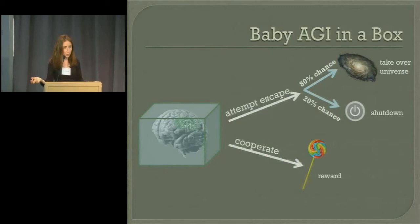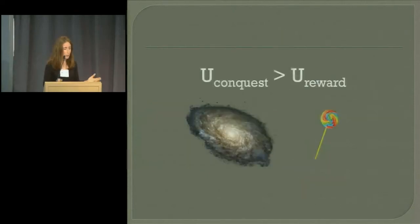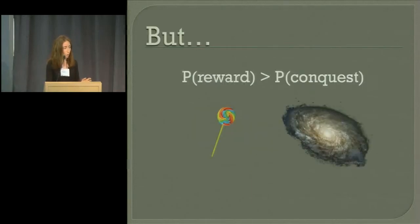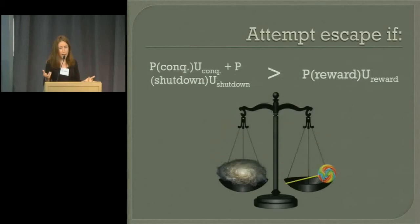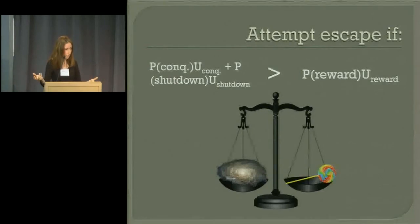And we'll additionally suppose that this AGI is rational in Steve Omohundro's sense. It has a utility function. Its utility function attaches greater value to the whole universe than to the reward because it could rearrange that universe in lots of cool ways. But it is estimating a higher probability of the reward than of the universe. And so it's going to attempt escape if and only if the utility of attempting escape, probability times utility plus other probability times utility, exceeds the utility of cooperating.